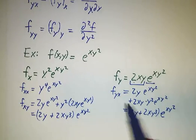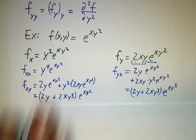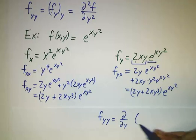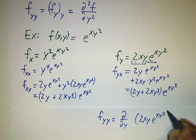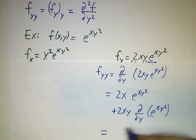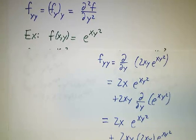You probably noticed that f_yx gives the same answer as f_xy. Taking the derivative with respect to x and then y happened to give the same answer as taking the derivative with respect to y and then x. Now let's figure out f_yy: the derivative of 2xy e to the xy squared with respect to y. Using the product rule: 2x e to the xy squared plus 2xy times 2xy e to the xy squared, giving (2x + 4x²y²) e to the xy squared.